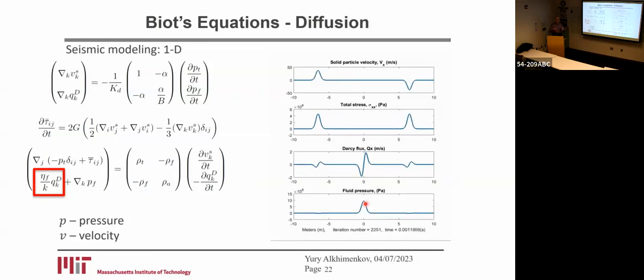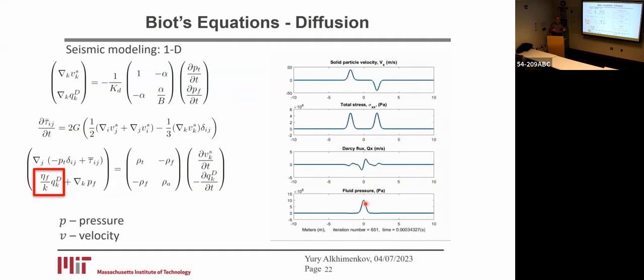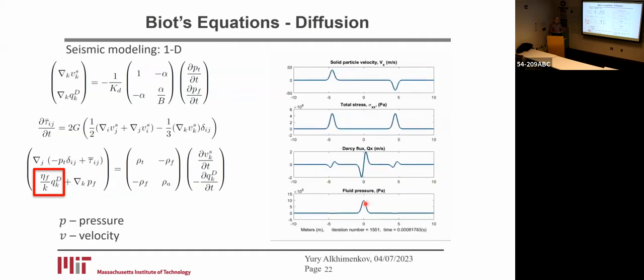You can think about it as viscous honey — under room temperature, it spreads over time like a Gaussian. That's how fluid flow takes place in porous media.